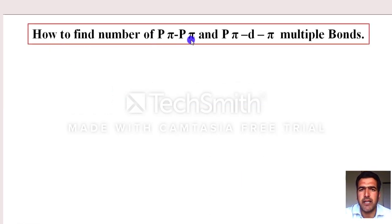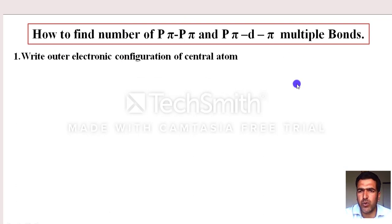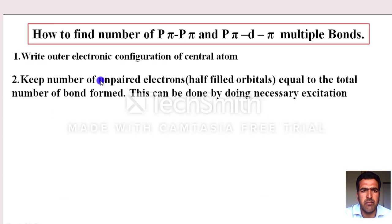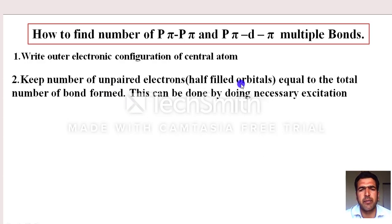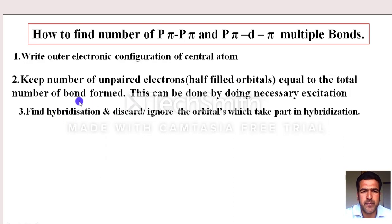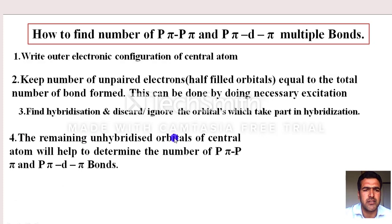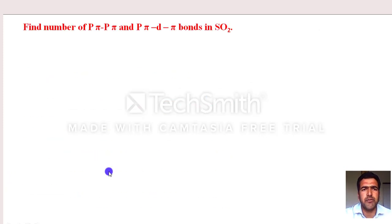Now let's learn how to find the number of pπ-pπ and pπ-dπ multiple bonds in a molecule. Rule 1: Write the electronic configuration of the central atom. Rule 2: The number of half-filled orbitals should equal the total number of covalent bonds. If not, we perform excitation. Rule 3: Find the hybridization of the central atom. The orbitals participating in hybridization are ignored; the remaining unhybridized orbitals help us determine pπ-pπ and pπ-dπ bonds.